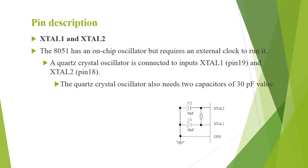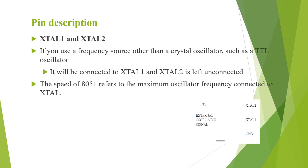The quartz crystal oscillator requires 2 capacitors of value 30 pF, and the connection is shown in the figure. If a frequency source other than a crystal oscillator is used, such as a TTL oscillator, it will be connected to XTAL1 and XTAL2 will be left unconnected. The speed of 8051 refers to the maximum oscillator frequency connected to XTAL2.